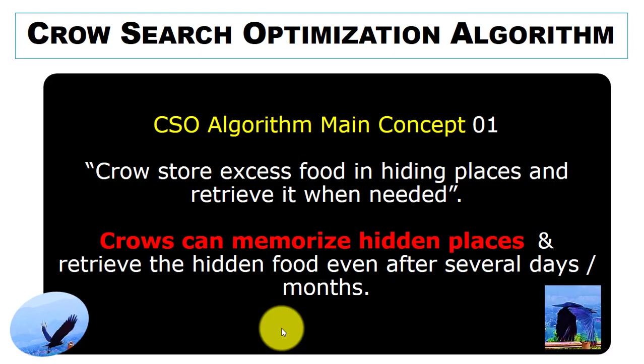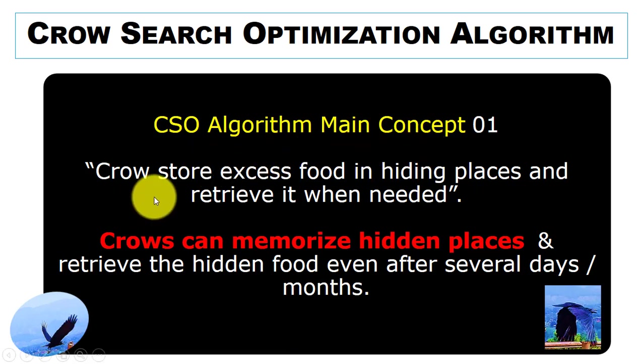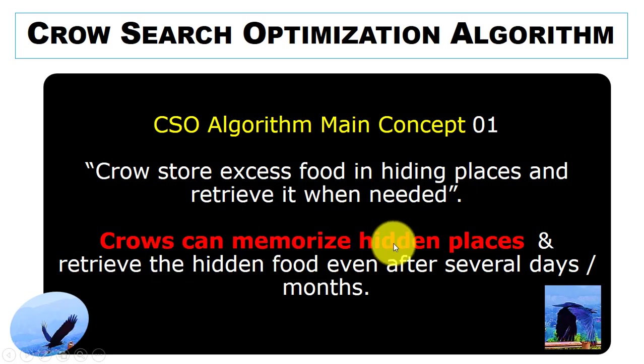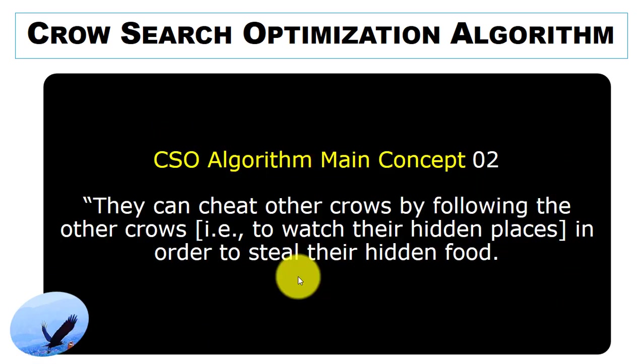There are two main concepts for this algorithm. First, crows store excess food in hiding places and retrieve it when needed — they memorize the hidden places and can retrieve food even after several days or months. Second, they can cheat each other by following other crows in order to steal their hidden food.